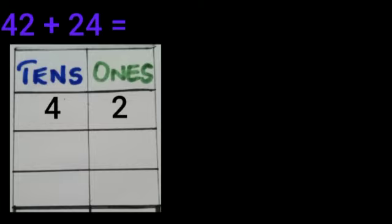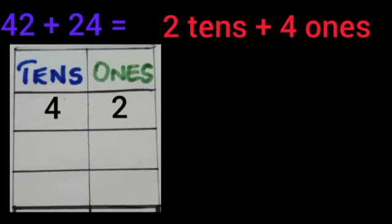Then in 24, yes, 2 tens and 4 ones. So in ones column, we should write 4 and in tens column, we should write 2.